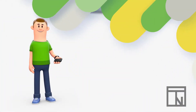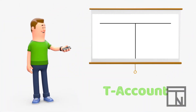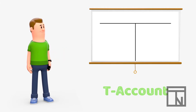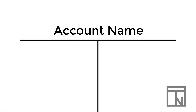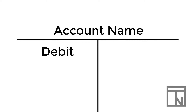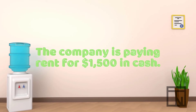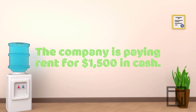It is called a T-account because the tool looks like a capital T. At the top of the T you will record the name of the account you are using in your transaction. On the left side of the T you record any debits, and on the right side of the T you record any credits.